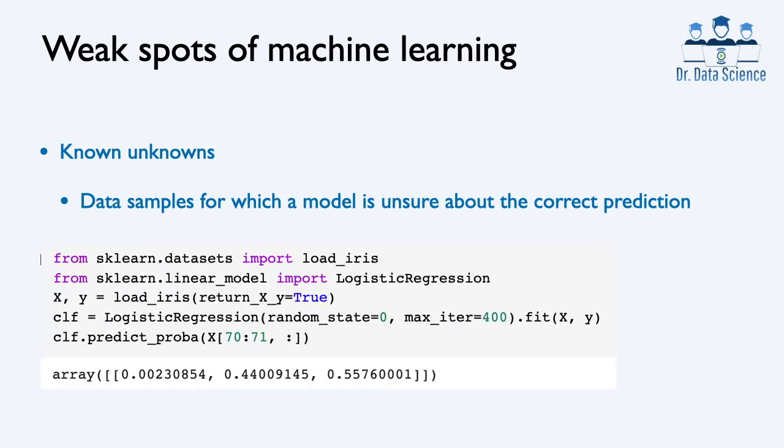Let's take a look at this simple example where we use the logistic regression algorithm for classifying the iris flower dataset containing three species — a classification problem with three classes. This popular benchmark is already part of the scikit-learn datasets. After training the classifier, we use the method predict_proba — CLF.predict_proba — to give us the probabilities that each sample belongs to one of the three classes.